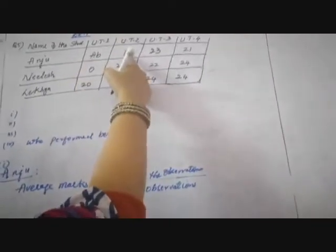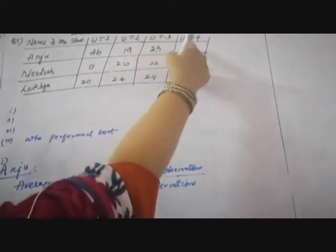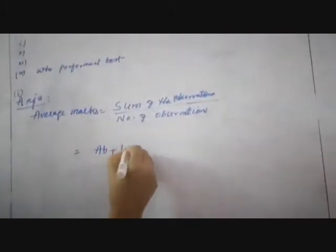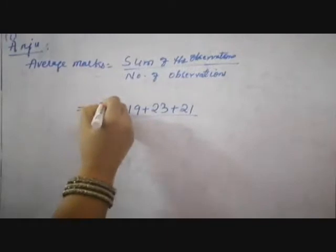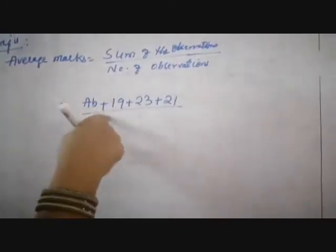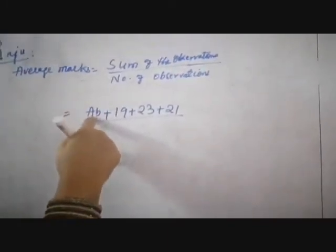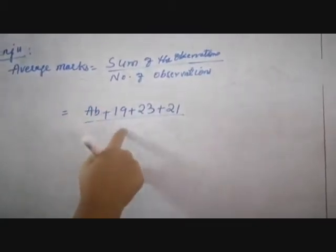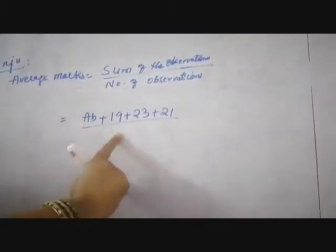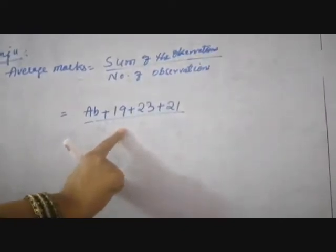What are the marks Anju got in unit test 1? Absent. Unit test 2: 19. Unit test 3: 23. Unit test 4: 21. So, absent, 19, 23 plus 21 divided by — 4 tests were there, but she was absent. This girl was absent for one test. He is asking find the average marks required by Anju.